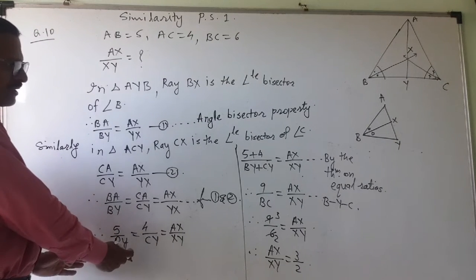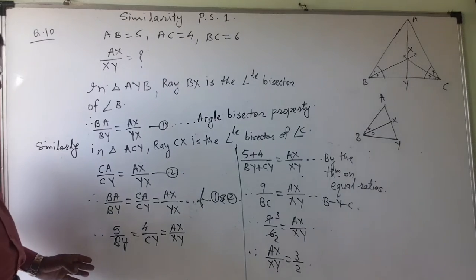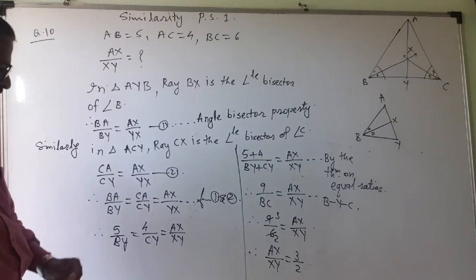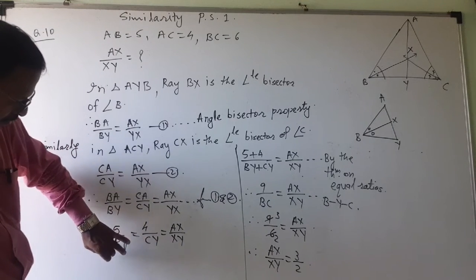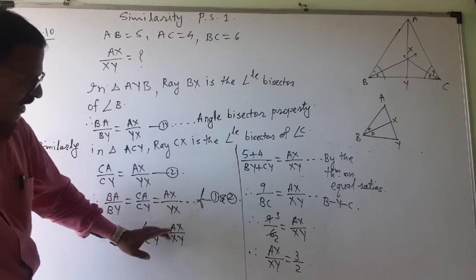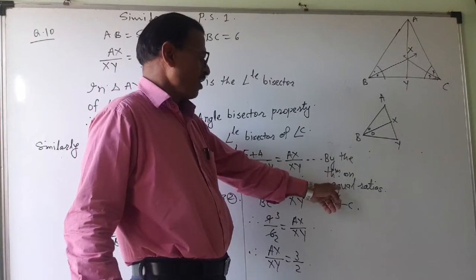That is the theorem on equal ratios that we have studied in ratio and proportion in standard 9. So I can this way add 5 plus 4. BY plus CY is equal to AX upon this way, by the theorem on equal ratios.